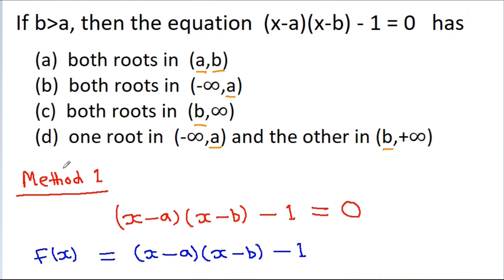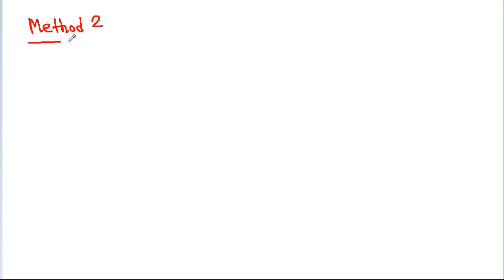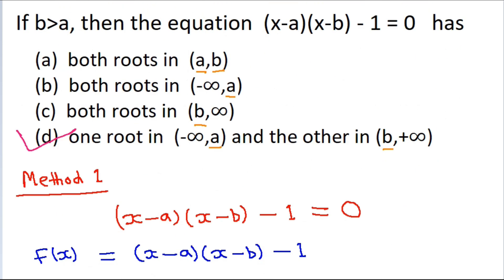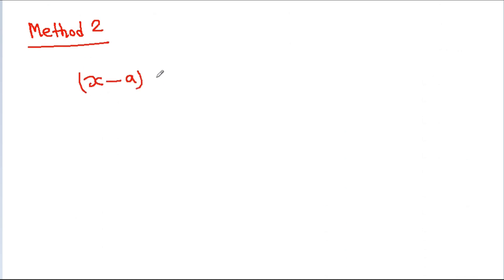So the correct option will be option D. Now for method 2: we have (x-a)(x-b) minus 1 is equal to 0.